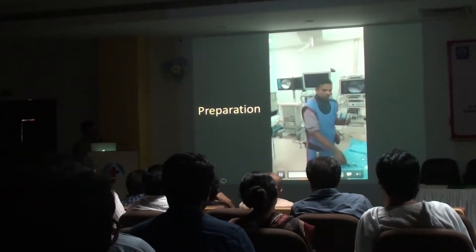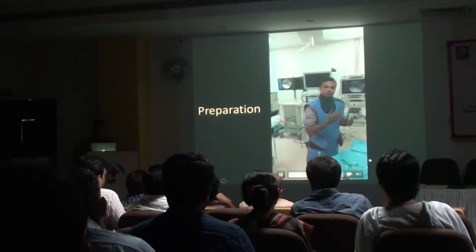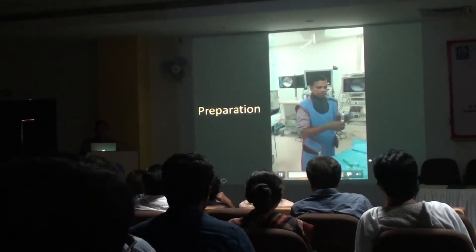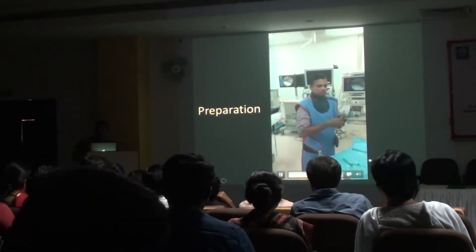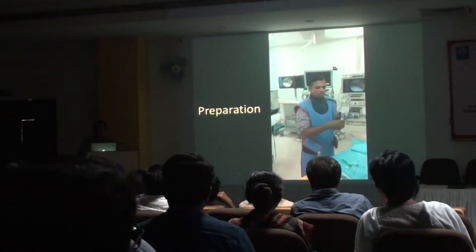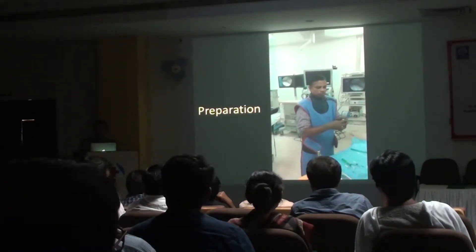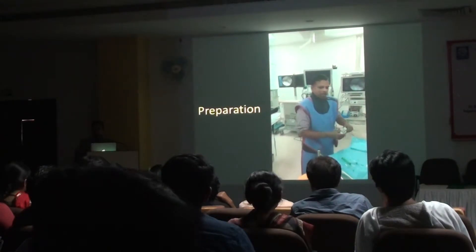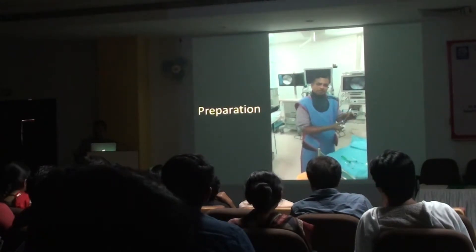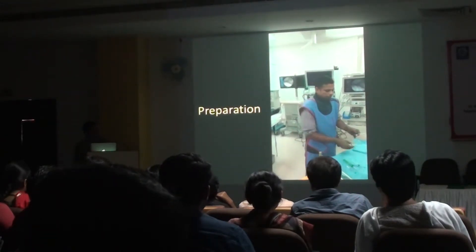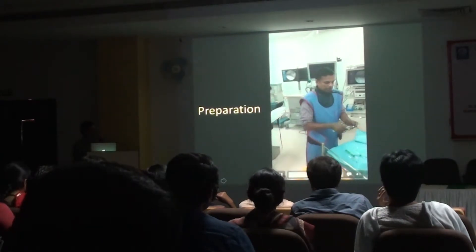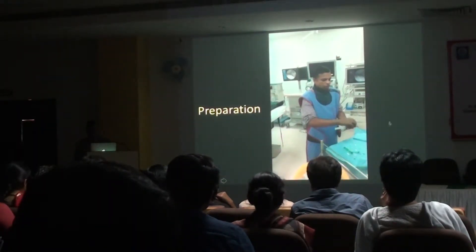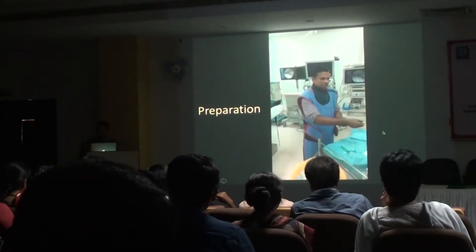You need a 3-way tap. The key thing in MR arthrogram is not to inject air into the joint — not because it causes harm, but because you can't tell what pathology is and what the air bubble is. So make sure you flush the entire thing so there is no air bubble left in the 3-way tube.